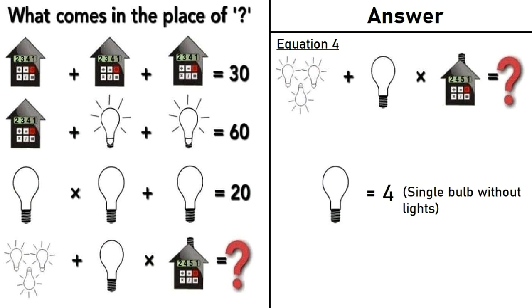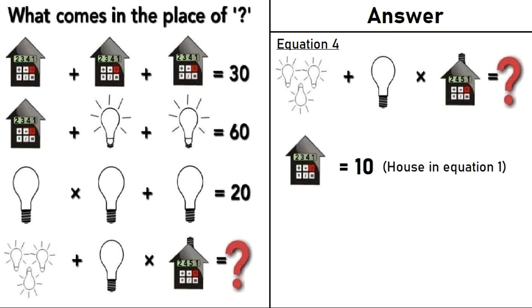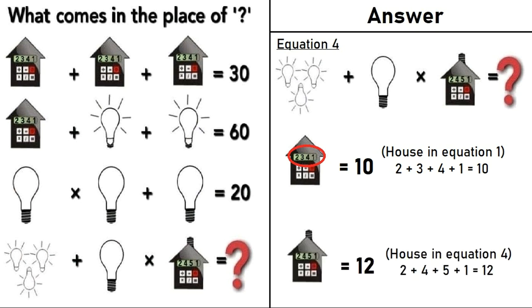From equation 3, we have a bulb is equal to 4. From equation 1, we have house is equal to 10. If you see, we have 2, 3, 4, 1 digits in the house. 2 plus 3 plus 4 plus 1 is equal to 10. The house in equation 4, if you see the digits, we have 2, 4, 5, 1. If we add all the digits in the house, 2 plus 4 plus 5 plus 1 is equal to 12. House in equation 4 is equal to 12.